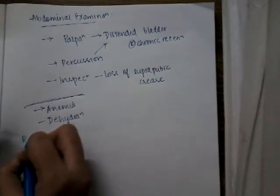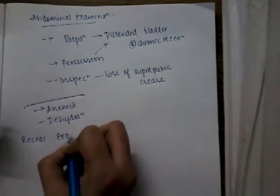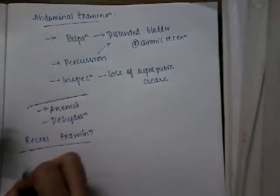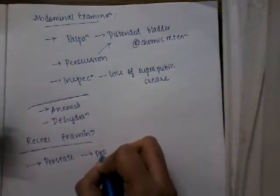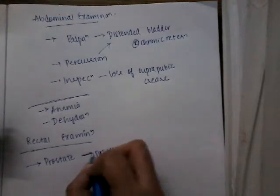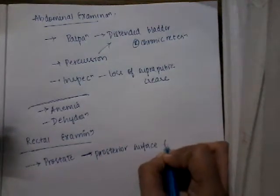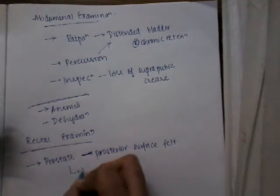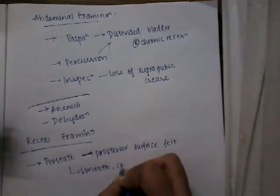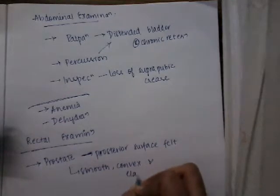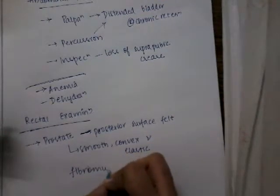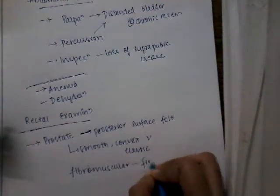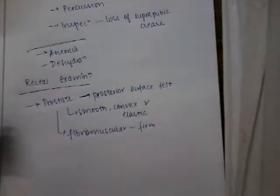Then rectal examination can be done. Through rectal examination, the prostate posterior surface is felt. It is generally smooth, convex, and elastic. If there is fibromuscular type, it may be firm in consistency. Normally it is smooth, but if it is fibromuscular type, then it is firm in consistency.